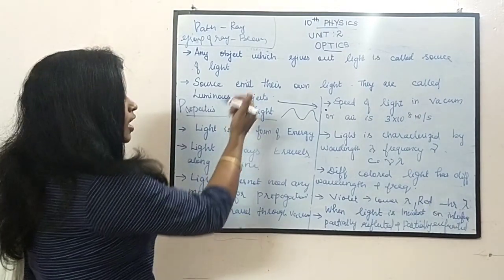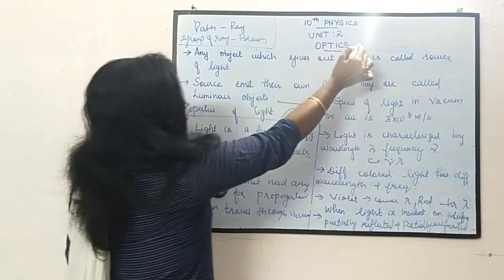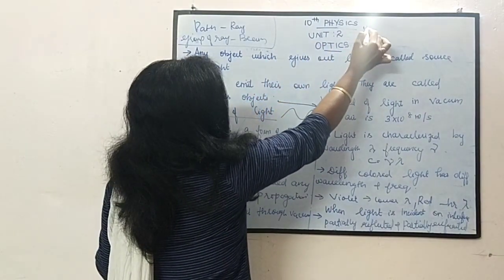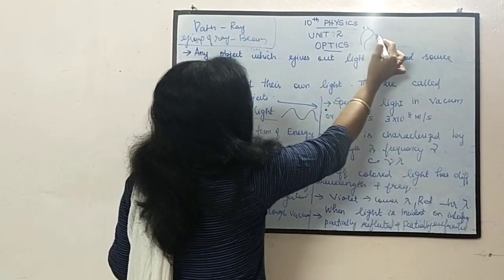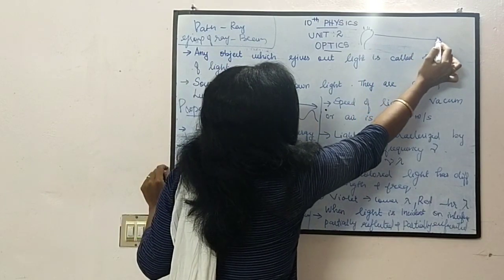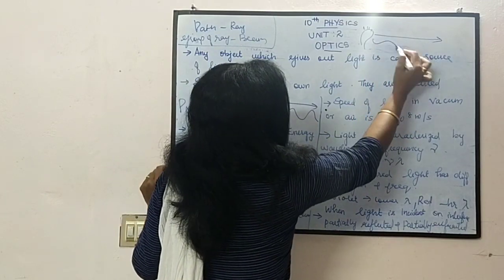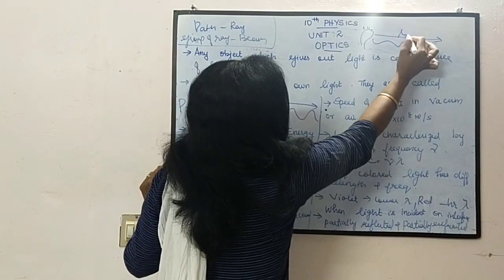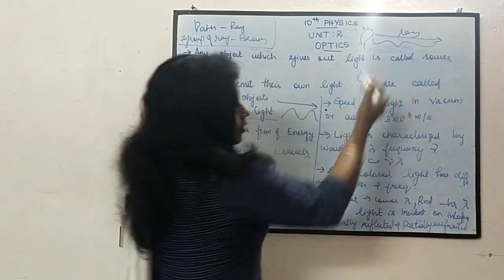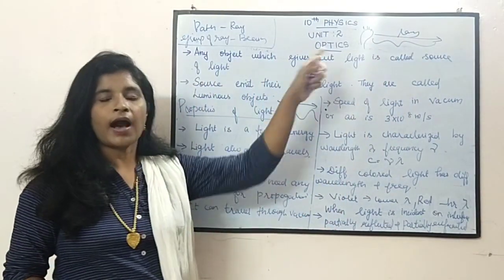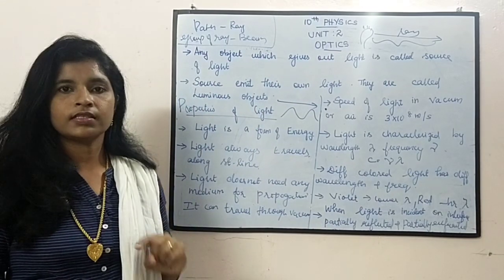The path travelled by the light is called as a ray. Suppose this is the bulb — if the light is travelling in this path, this path is called as a ray.